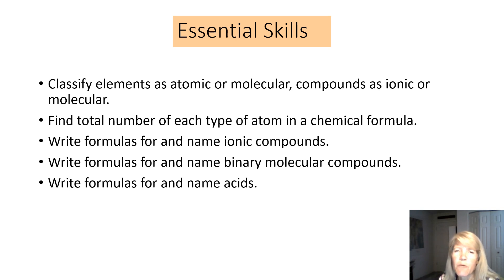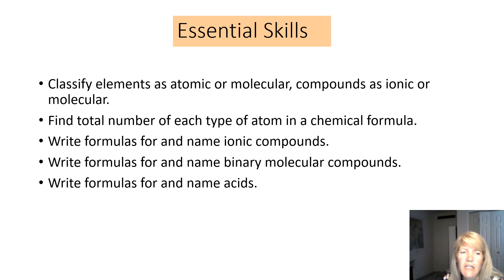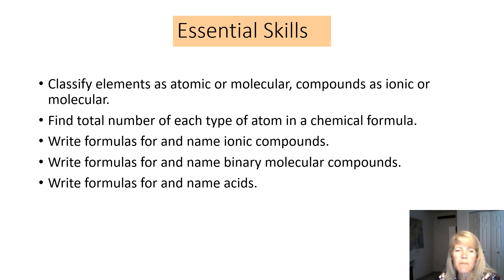For the essential skills from this chapter: be able to classify elements as atomic or molecular, and compounds as ionic or molecular; find the total number of each atom in a chemical formula; write formulas for and name ionic compounds; write formulas for and name molecular compounds (two-element ones); and write formulas for and name acids.